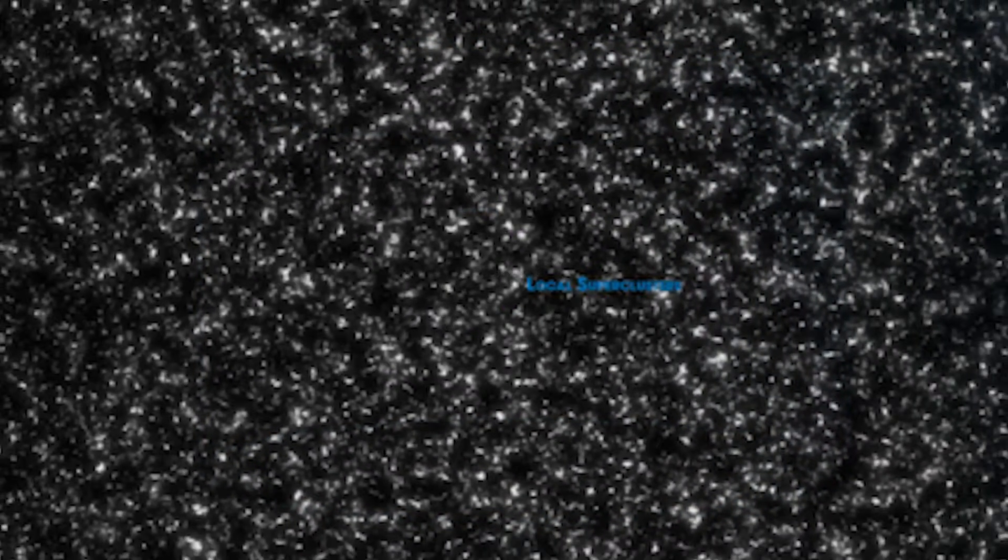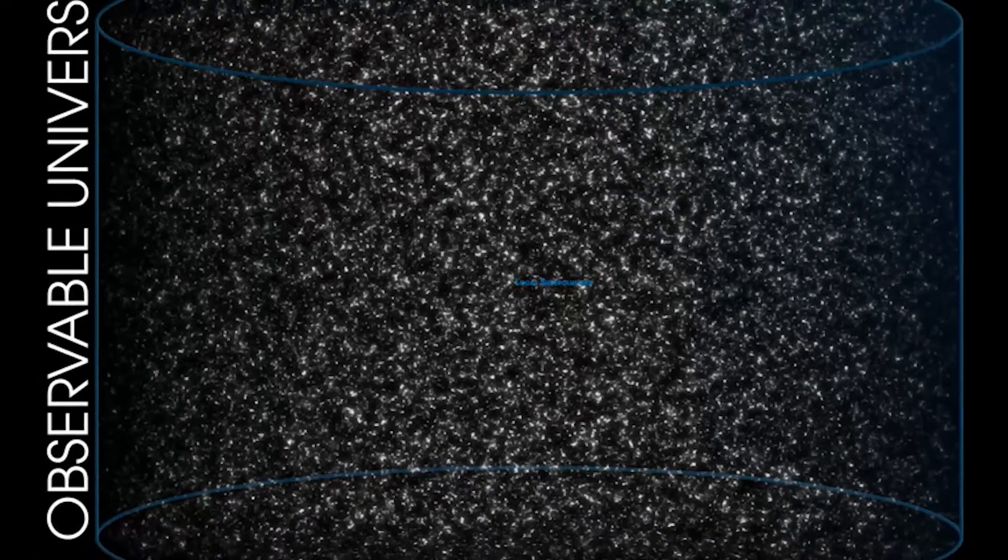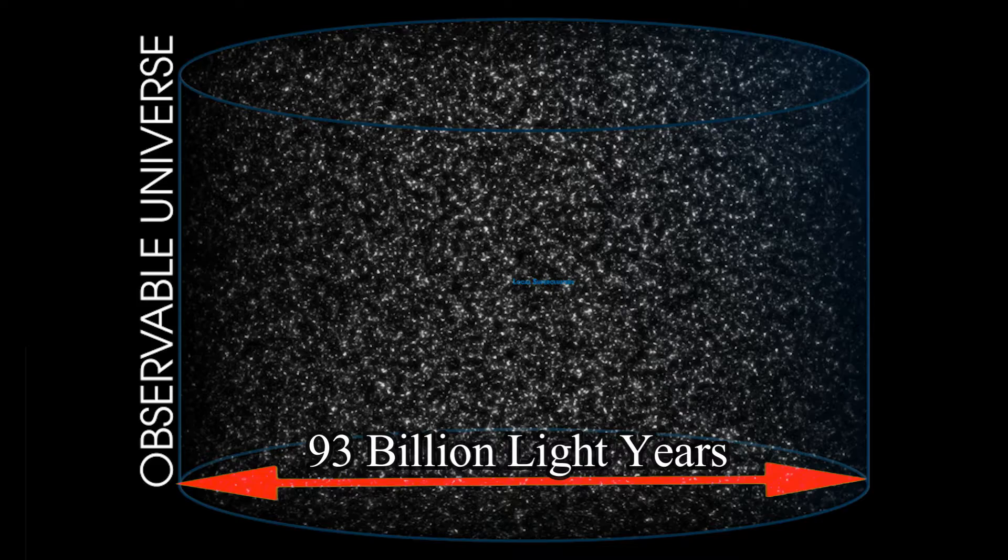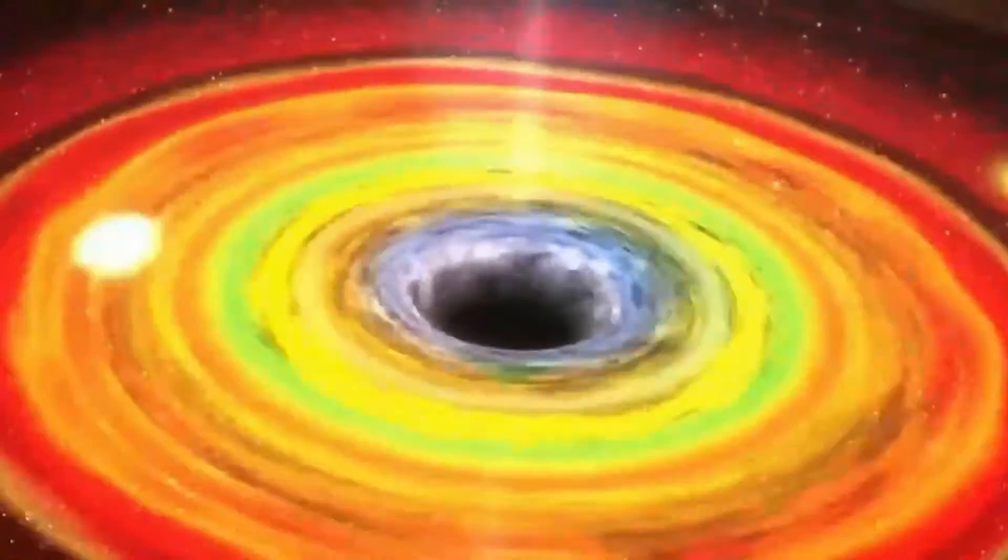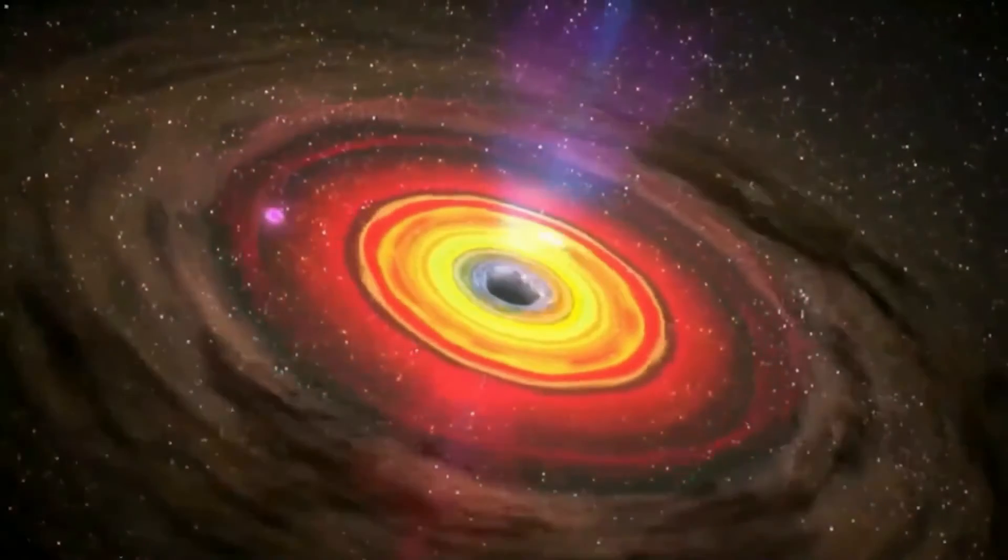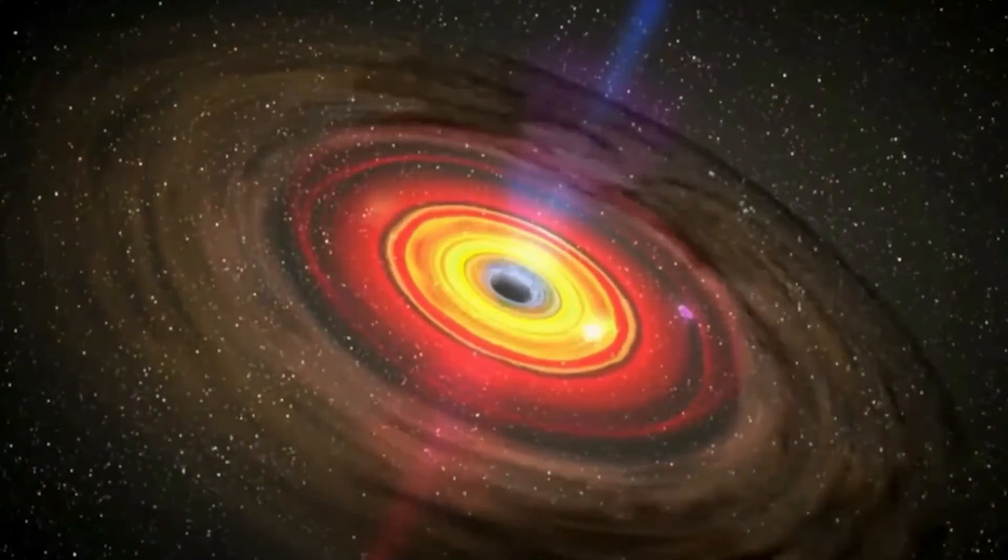And to finally scale this even further, we look out past the Laniakea Supercluster to find the observable universe which spans across a total of 93 billion light years from end to end. This observable universe is everything we know to be in existence and contains 2 trillion other galaxies within the observable universe itself.